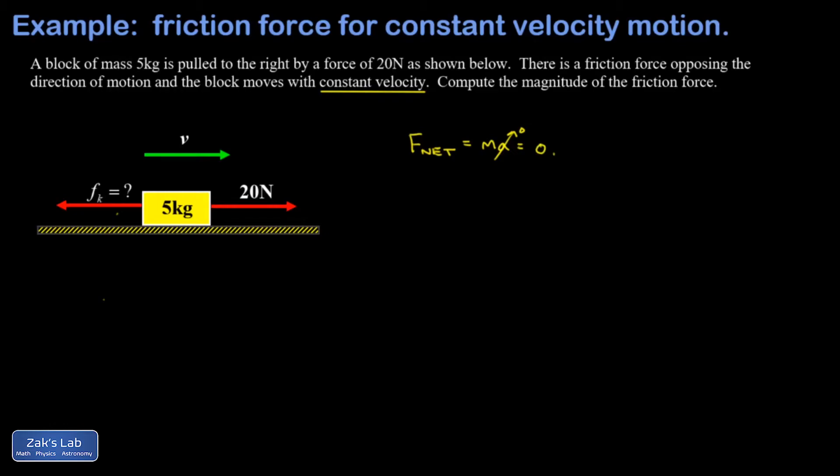I'm not concerned with the vertical direction for this problem because the friction is acting horizontally. So this means the net force in the horizontal direction is zero, and that means all the horizontal forces must be balanced. The only way to end up with a net force of zero horizontally is if that friction force is equal to 20 newtons.